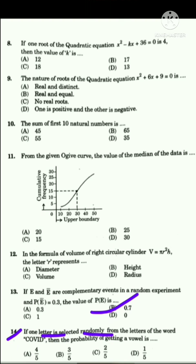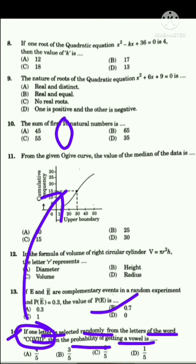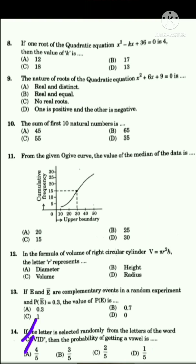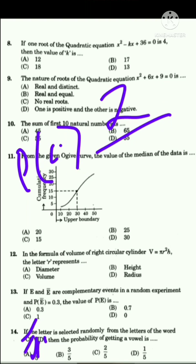The fourteenth question: if one letter is selected at random from the word COVID, find the probability of getting a vowel. The vowels in COVID are O and I, giving 2 vowels out of 5 total letters. So the probability is 2/5. The answer is option C.